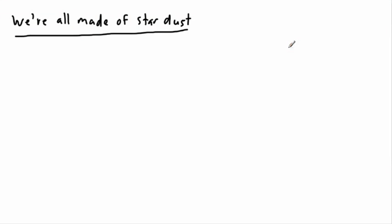In astronomy, we have a really cool model that explains how everything we're made of got to be. It's explained well by this idea that we're all made of stardust. This is how the model actually works.